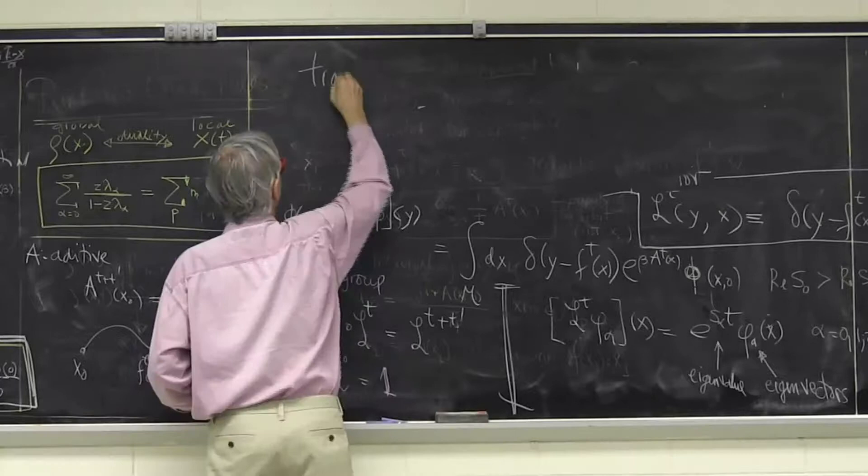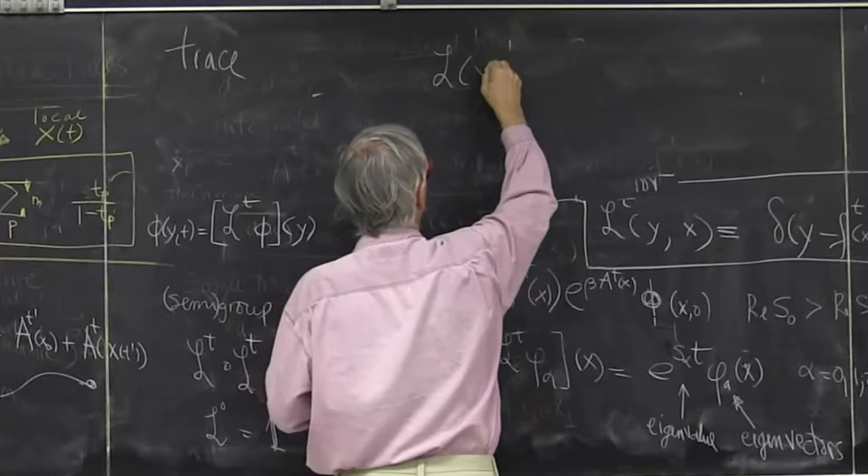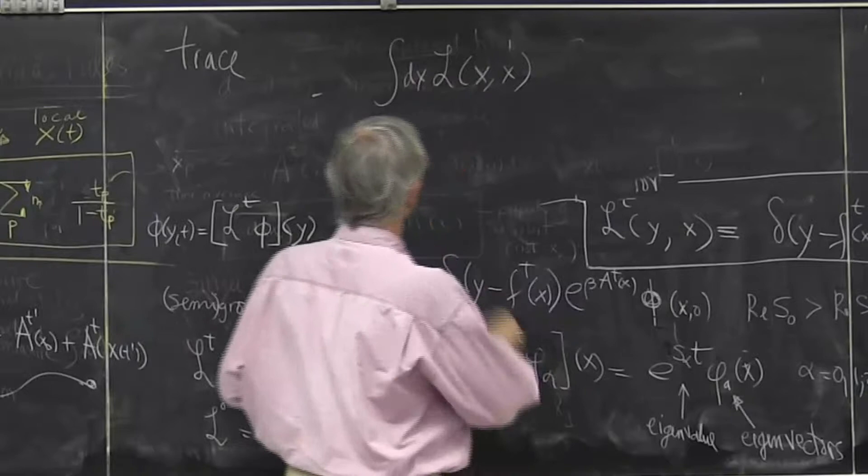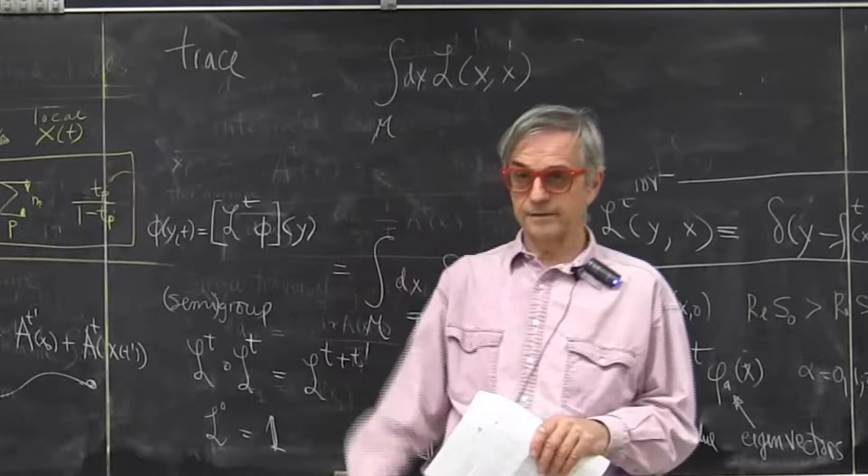I have this operator that looks like this, y and x. Now what is trace? I identify initial and final point and I integrate over all such points, that's a trace. For finite matrix, this is a trace and when it's labeled by continuous index, that's a trace.